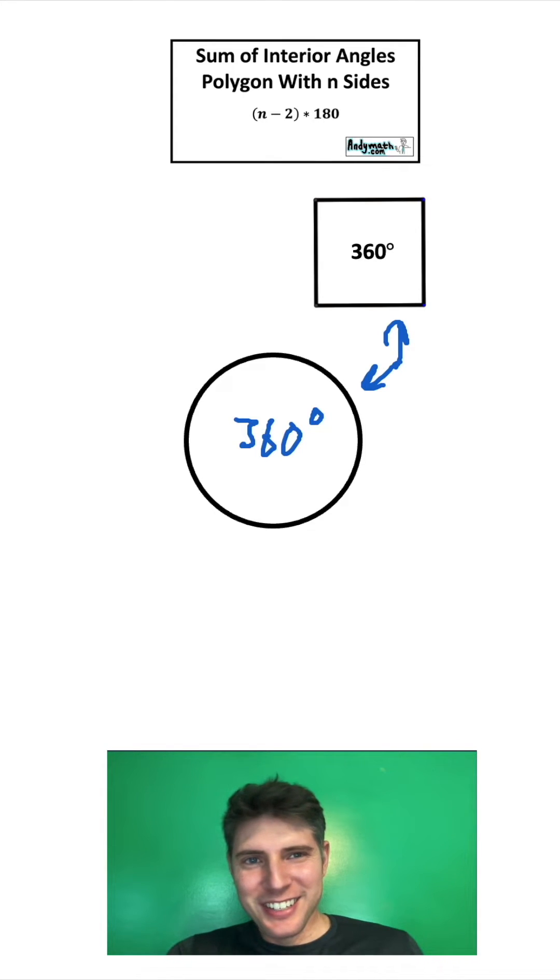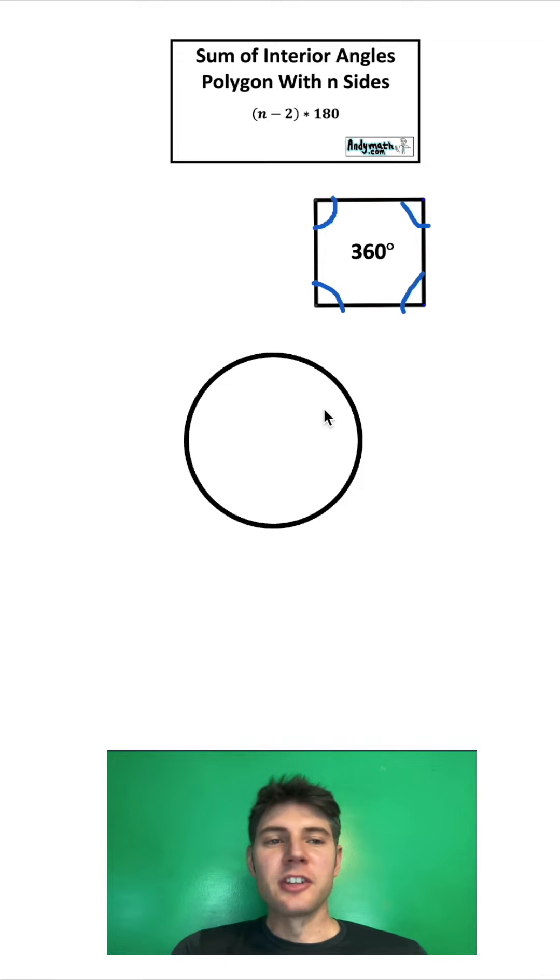The trick here is this: 360 degrees in a square is adding up angles. In a circle, that 360 degrees is your central angles. If we add up all of these, they will always add up to 360.